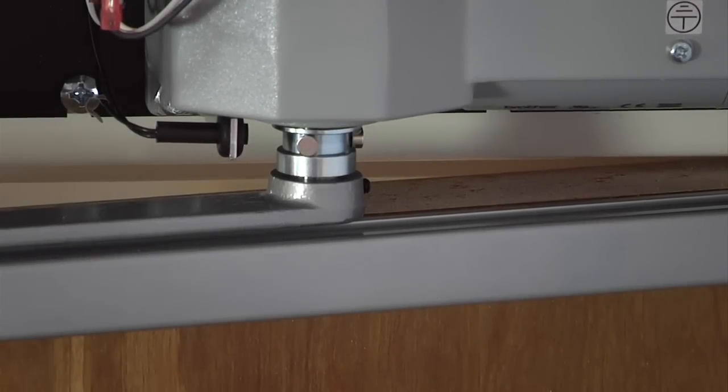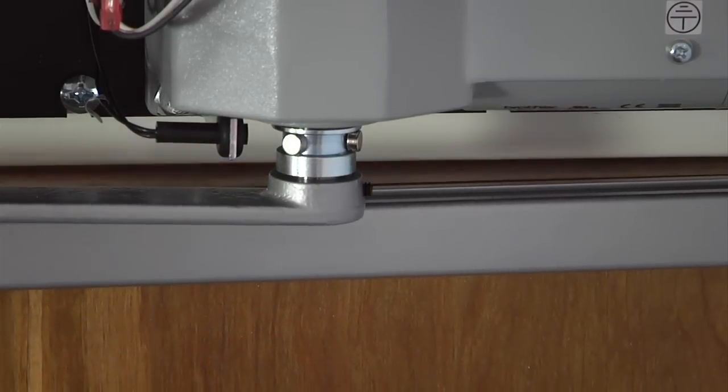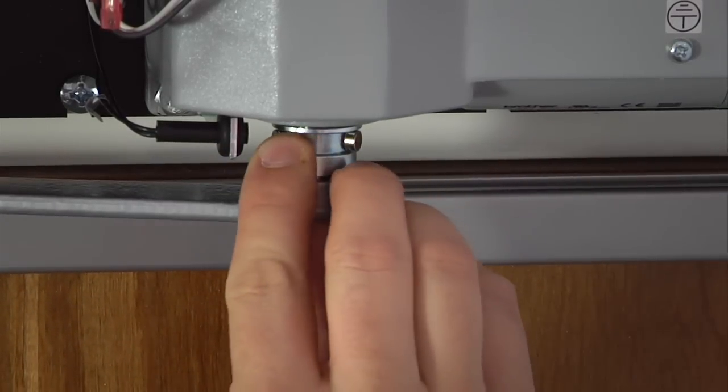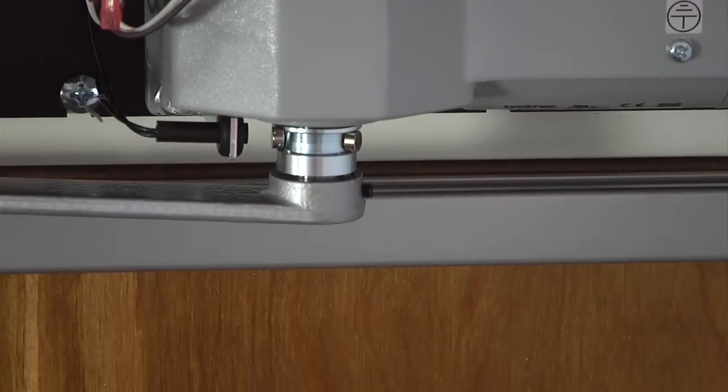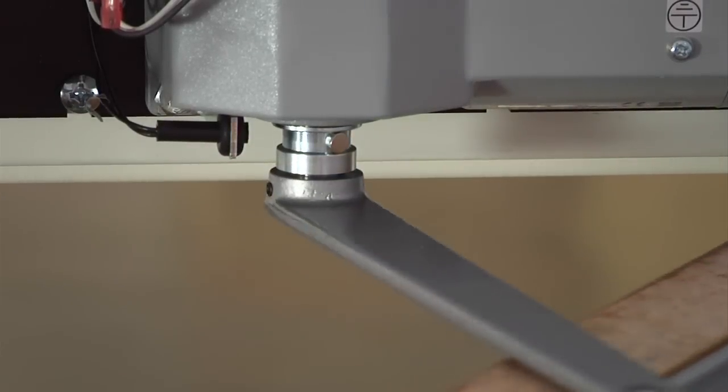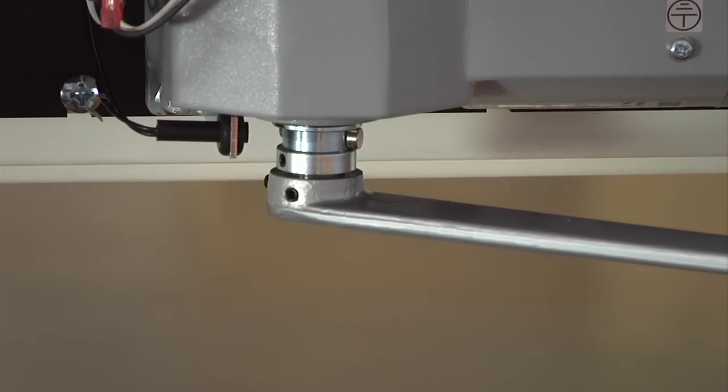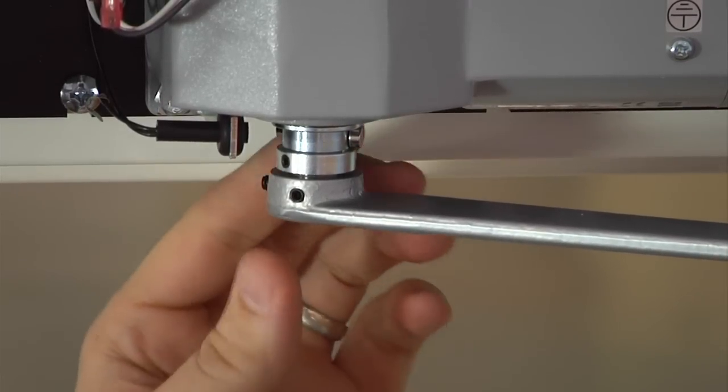Magnets are used to signal the unit is at closed and fully open positions. With the door in the closed position, slide the closed position magnet so it aligns directly with the sensor. Then open the door to the preferred location and align the open position magnet with the sensor.